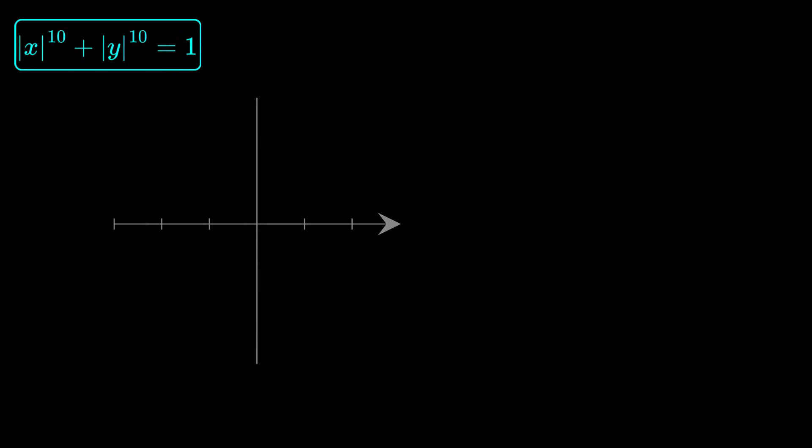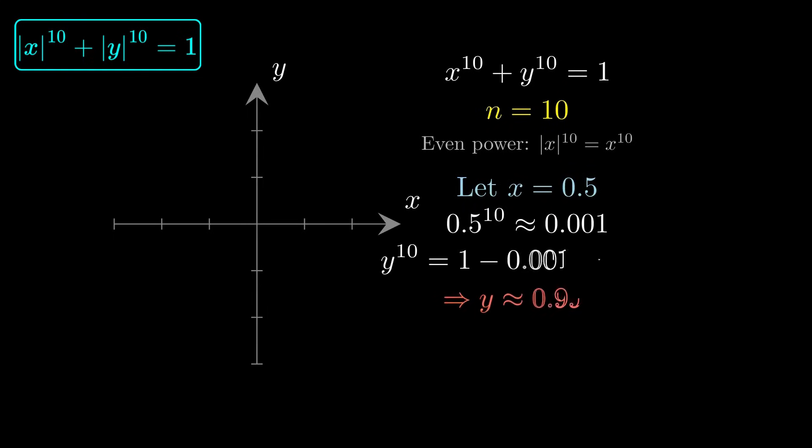Now, set the exponent to 10. The equation is absolute x to the power 10 plus absolute y to the power 10 equals 1. Try x equals 0.5. 0.5 to the power 10 is about 0.001. So, y to the power 10 must be 0.999, which means y is almost 1. The top becomes practically flat.